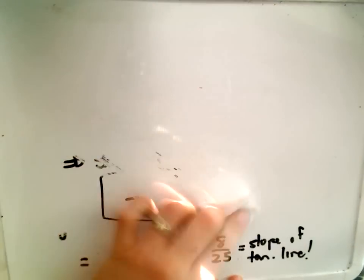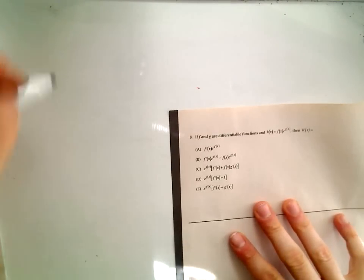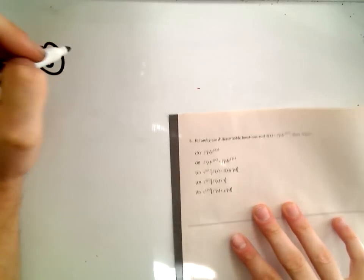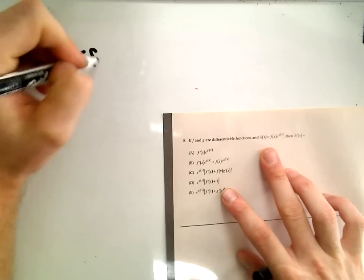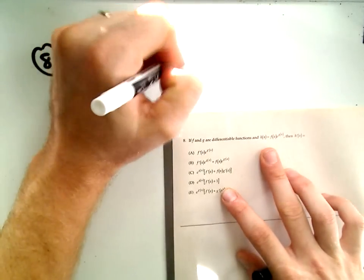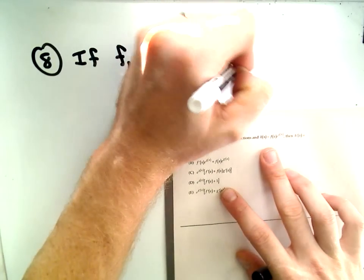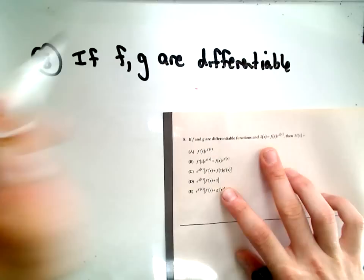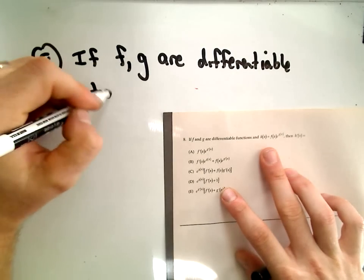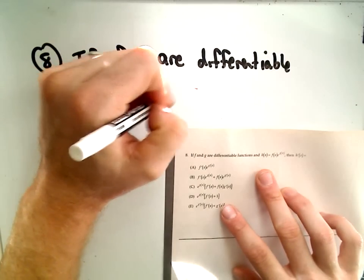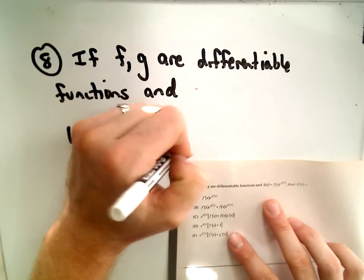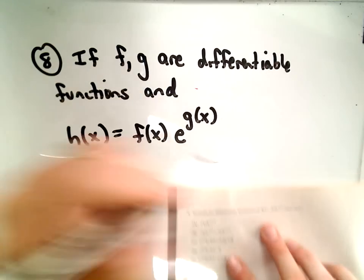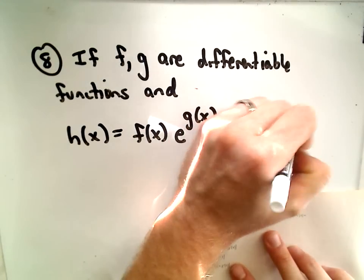One more question here. I think this one is just kind of one of these generic notation questions — are you going to freak out if you see a lot of notation? It says if f and g are differentiable functions, and we define h of x to be f of x times e raised to the g of x, then h prime of x equals what?